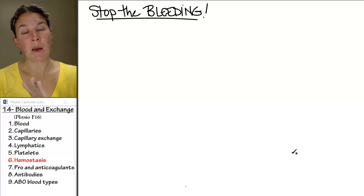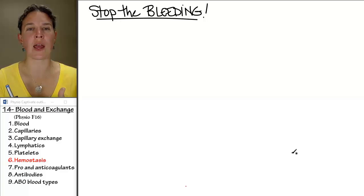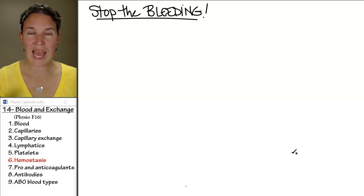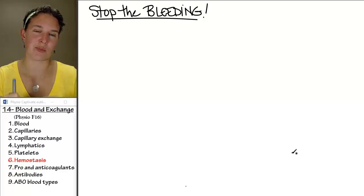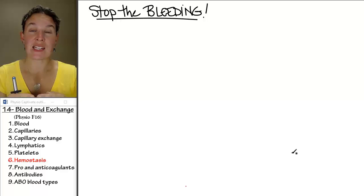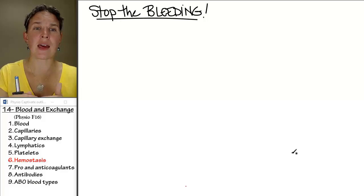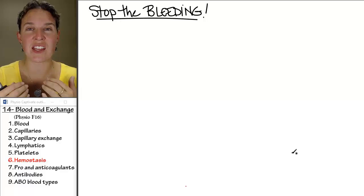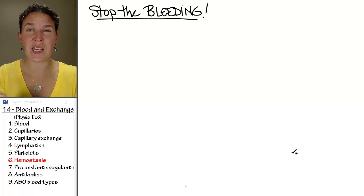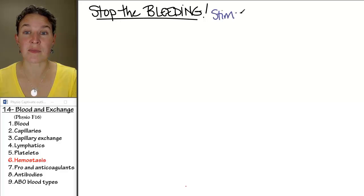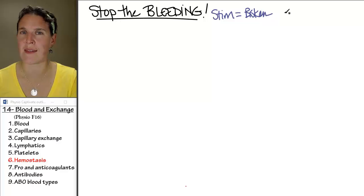There are three things that happen when you have damage to your blood vessel. In order for you to bleed and need a clot, you have to break a blood vessel — break it — and now you have damage in such a way that a hole has been created. So it's the broken blood vessel that is the stimulus for everything we're going to talk about. Your stimulus is a broken vessel.